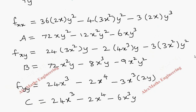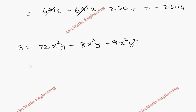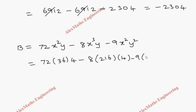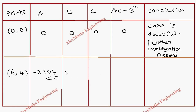Now we calculate b at (6, 4) using b = 72x²y - 8x³y - 9x²y²: 72 · 36 · 4 - 8 · 216 · 4 - 9 · 36 · 16. This gives 10368 - 6912 - 5184, which totals 1728. So b = 1728.